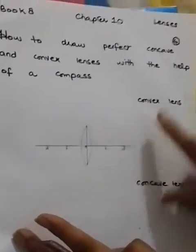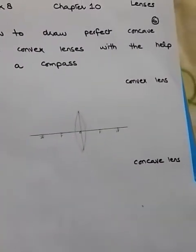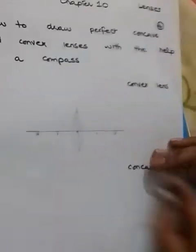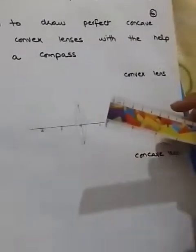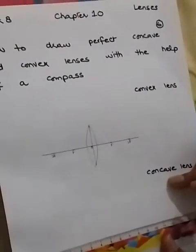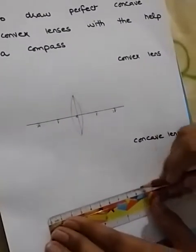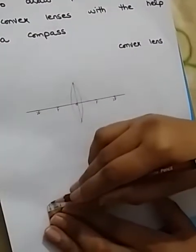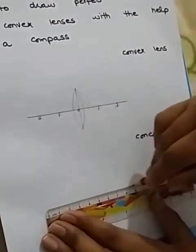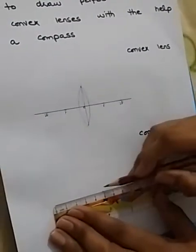This is a perfect convex lens. Now for the concave lens, I will repeat the process. I'm going to draw a line of 10 centimeters and find the middle.